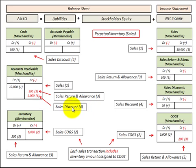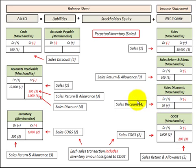For a sales discount, let's assume a customer pays $1,000 on account. We reduce accounts receivable by $1,000, and they took a sales discount of 2%, which is $20, so we debit sales discounts for $20. The balance goes into cash — we increase cash by $980.